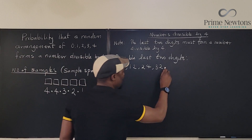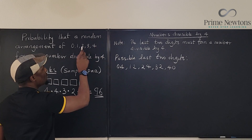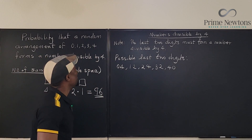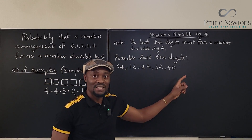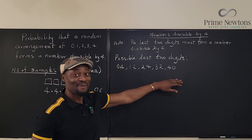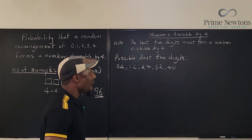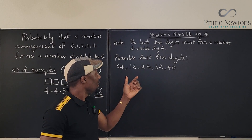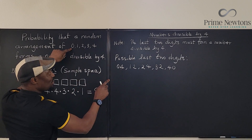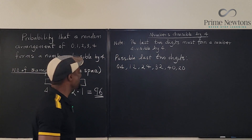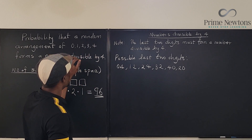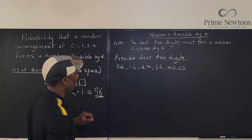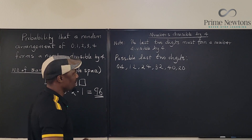For digits starting with 4: 40 is divisible by four — that's nice. 41 is not, 42 is not, 43 is not — we're done. Then I almost left out 20 — 20 is also divisible by four. So the possible last two digits are: 04, 12, 24, 32, 40, and 20. You can't mess this up, because if you do, you can't get the right answer.